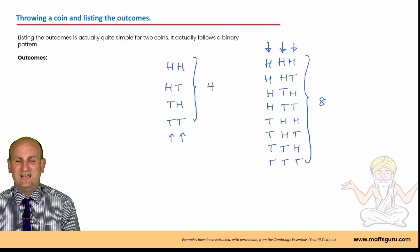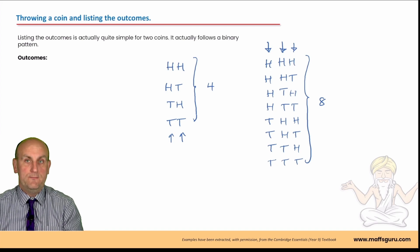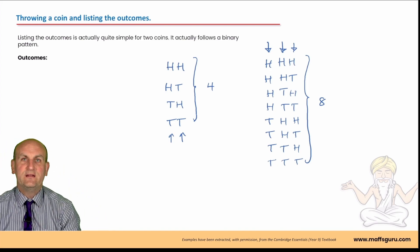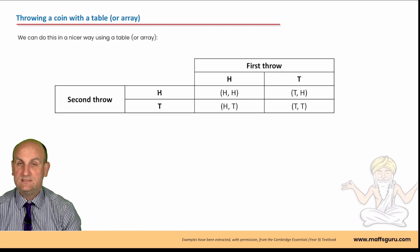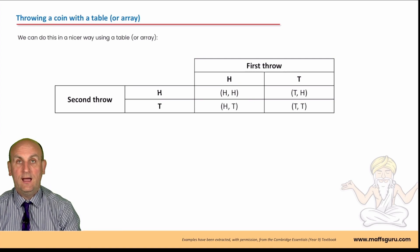Now, coins are great because realistically speaking, I now know there's a pattern to be able to do this and I'm not going to miss an outcome. But listing all these things gets a little bit trying, doesn't it? It's long. Isn't there a nicer way of being able to do this? Well, as it turns out, oh yes, there is. We can actually create a table or in Barry's language, thank you, Barry, an array.